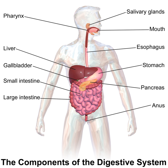Secretin is in the duodenum and signals the secretion of sodium bicarbonate in the pancreas and stimulates bile secretion in the liver; this hormone responds to the acidity of the chyme. Cholecystokinin is in the duodenum and stimulates the release of digestive enzymes in the pancreas and stimulates the emptying of bile in the gall bladder; this hormone is secreted in response to fat in chyme. Gastric inhibitory peptide (GIP) is in the duodenum and decreases the stomach churning, in turn slowing the emptying of the stomach; another function is to induce insulin secretion. Motilin is in the duodenum and increases the migrating myoelectric complex component of gastrointestinal motility and stimulates the production of pepsin.